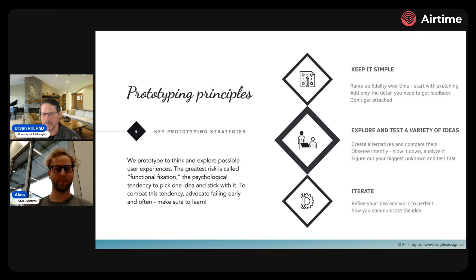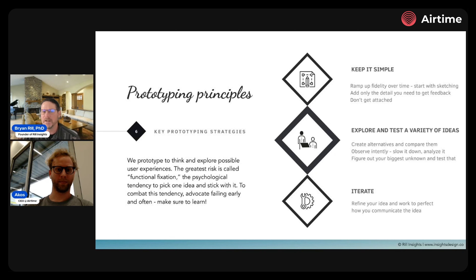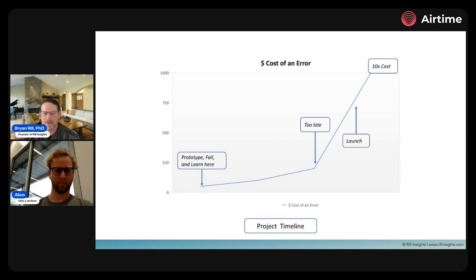How do we get past this? The answer is three things. One, you keep it simple in the beginning — ramp up fidelity over time, starting with sketches or very low fidelity prototypes, using only the detail you need to get initial feedback, and don't get attached. Two, have more than one thing you're testing — if you just test one solution, you're in a go or no-go situation, but with two or three prototypes you can figure out which works best. Three, based on results, iterate and work to perfect not only the product but how you communicate it.